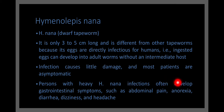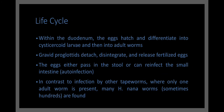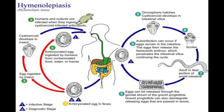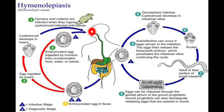Anorexia is the loss of appetite; diarrhea, dizziness, and headaches are easily understood. The life cycle of H. nana does not involve any intermediate host. The embryonated eggs are passed out in the feces of the infected person, and if these eggs are ingested by another uninfected human being through fecally contaminated food or water, it results in infection.